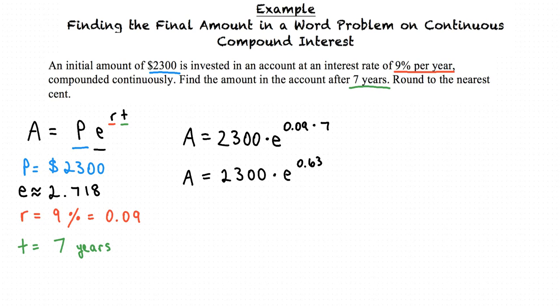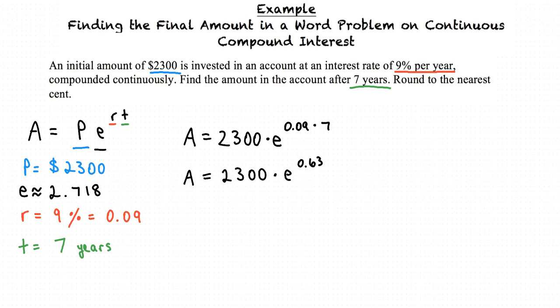Now it would be a good idea to use your calculator to find your answer. To find A we multiply 2300 times e to the power of 0.63. Most likely your calculator has a button for e. Make sure you use that to obtain an exact answer.